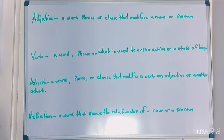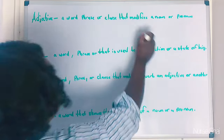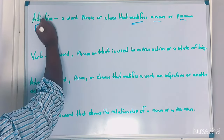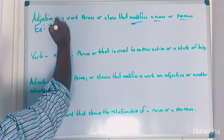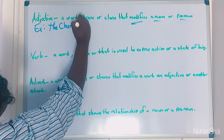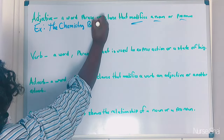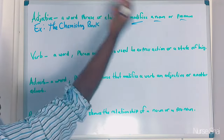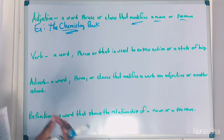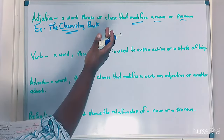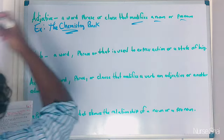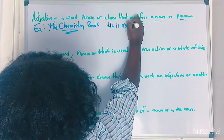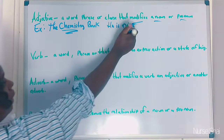An adjective is a word or phrase that modifies a pronoun or a noun. An example of an adjective would be 'the chemistry book' — 'chemistry' modifies 'book,' which is the noun. If 'chemistry' wasn't there, it wouldn't be an adjective. Another example would be 'he's nice' — 'he' is the noun and 'nice' is the adjective.